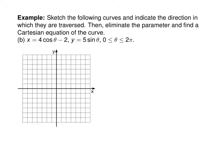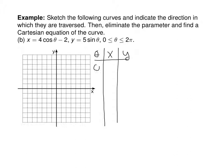Next, let's do one with trigonometry. x = 4cosθ − 2 and y = 5sinθ. At θ = 0: cosine is 1, so x = 4 − 2 = 2, and sine is 0 so y = 0. At θ = π/2: cosine is 0, so x = −2, and sine is 1 so y = 5. At θ = π: cosine is −1, so x = −6, and sine is 0 so y = 0.